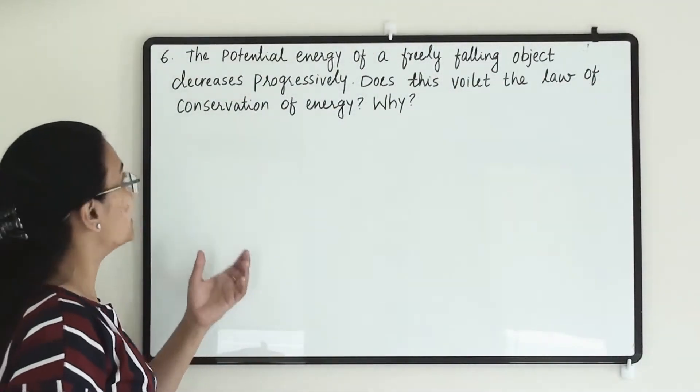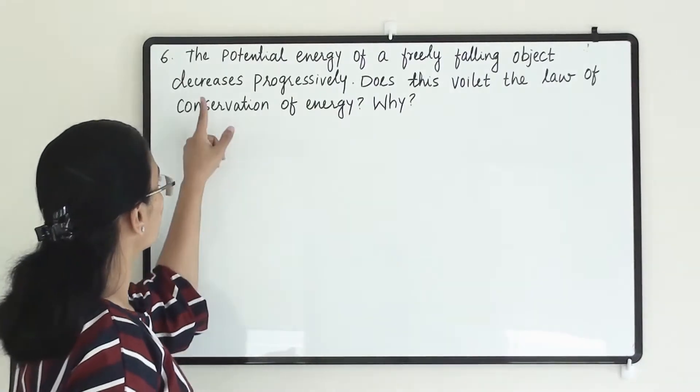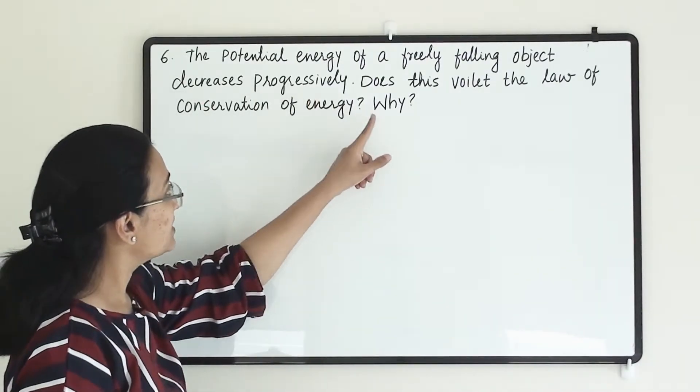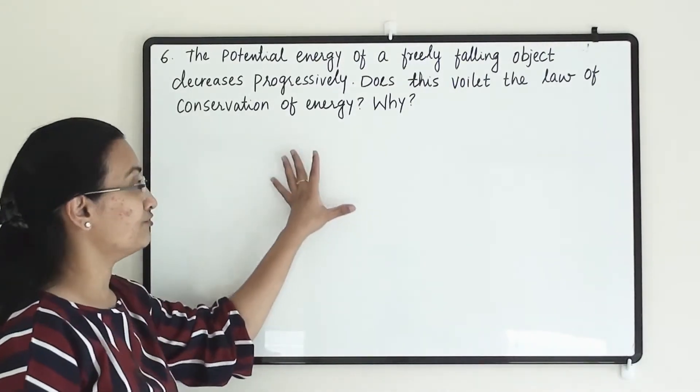Our sixth question is: the potential energy of a freely falling object decreases progressively. Does this violate the law of conservation of energy? Why?